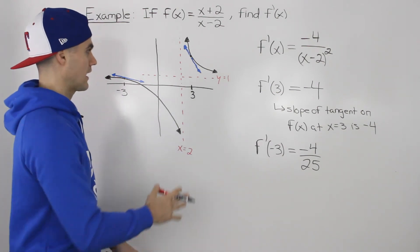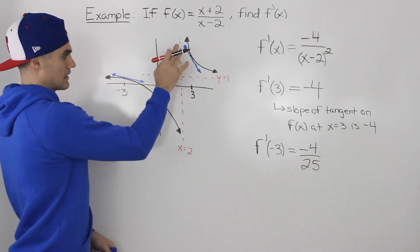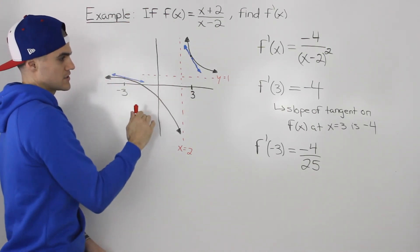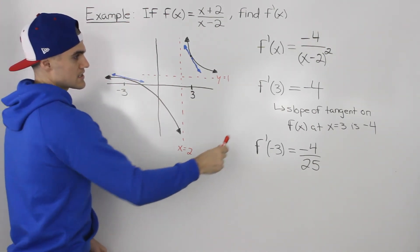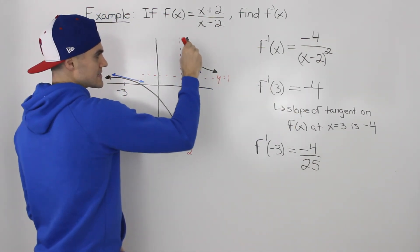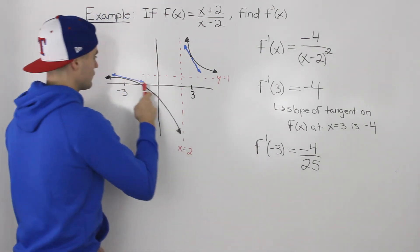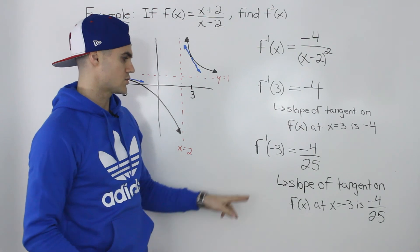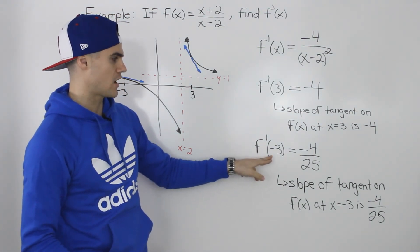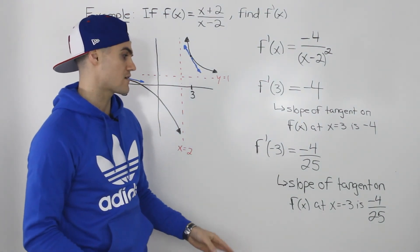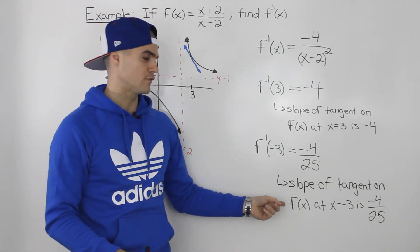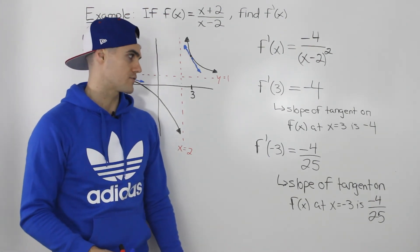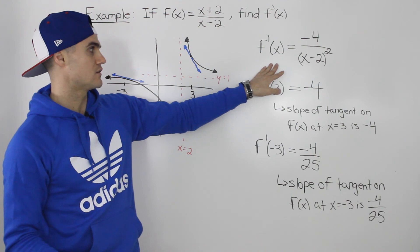A couple of things to note with these two slopes: both are negative, and we can see in the graph that the slopes are negative because from left to right the y values are decreasing. Also notice that the slope of -4 is much steeper than the slope of -4/25, and we can see that in the diagram as well. f'(-3) = -4/25 means the slope of the tangent on the function at x=-3 is -4/25.